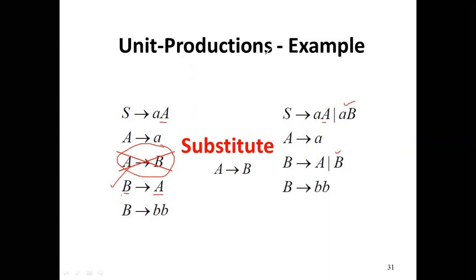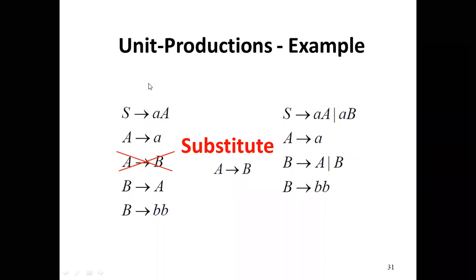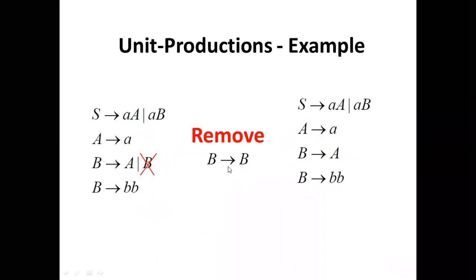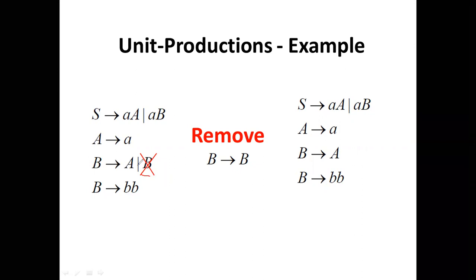Now our aim is to remove B to B. As you have seen from the previous slide, we get B to A or B to B. So now we have to remove B to B from our production set, since it is also a unit production.